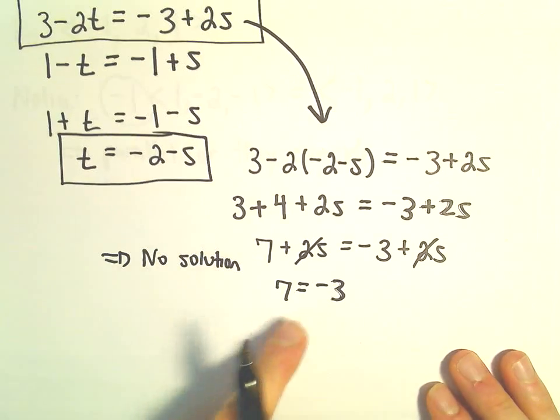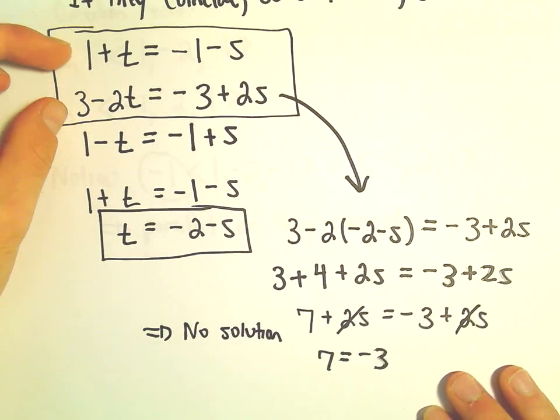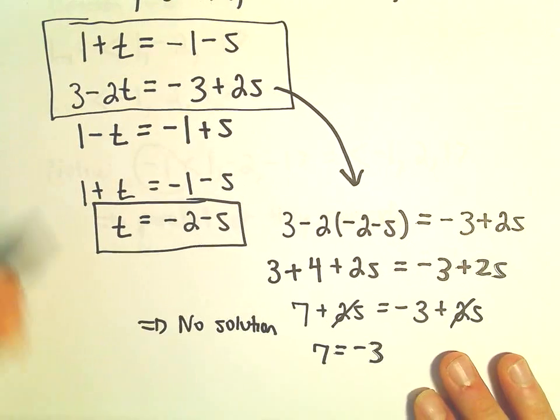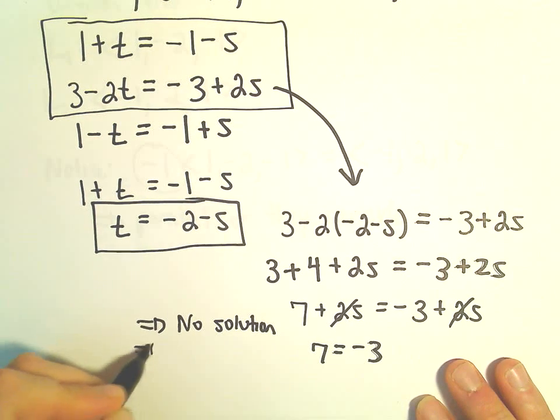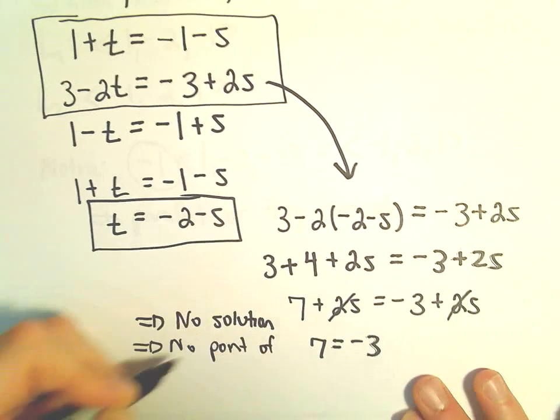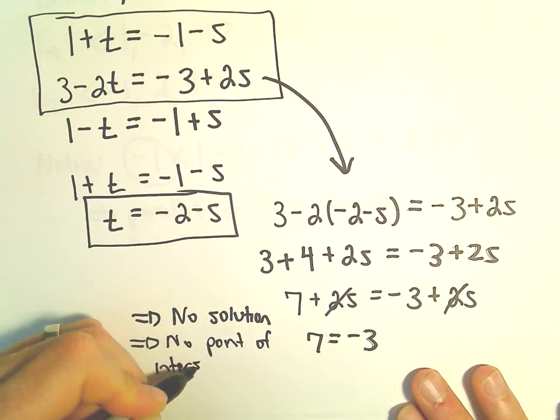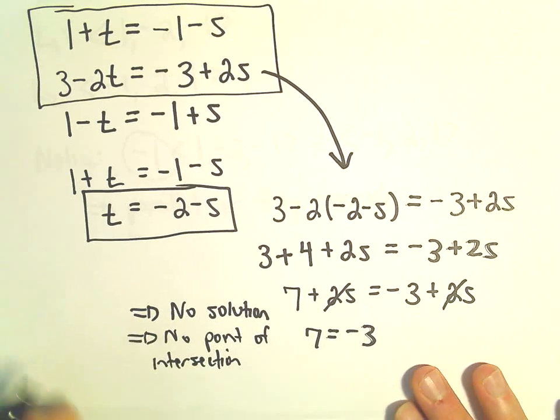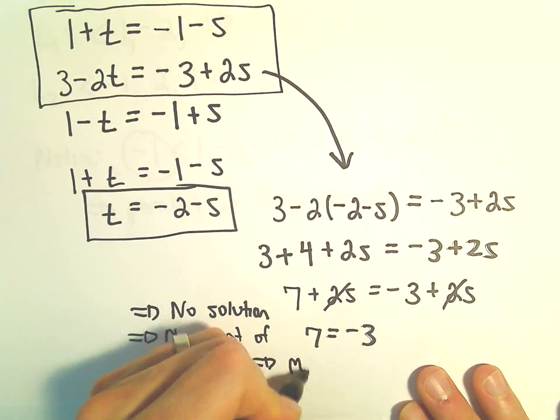So there's no value of s and t that's going to satisfy these two equations. So that simply tells me that there's no point of intersection. And since there's no point of intersection, that tells me that the lines must be parallel.